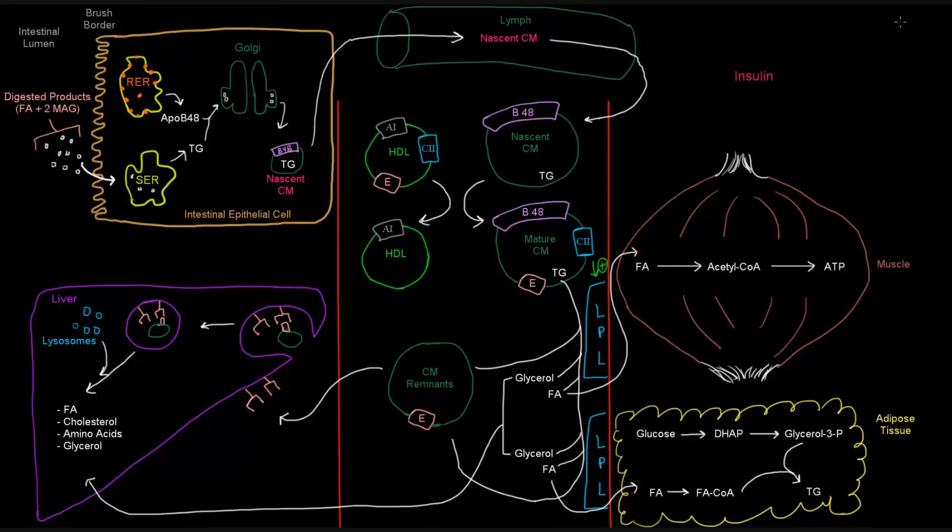Let's start up here at the top left in the intestinal lumen. So in the intestinal lumen, that's where we're going to have the digestive products from the food that we ate. We're going to have some fatty acids and some 2-monoacylglycerols. This just means that the acyl group that's attached to the glycerol is on the 2-carbon or the second carbon of the glycerol backbone. So these things are going to be taken up into the intestinal epithelial cells across the brush border from the intestinal lumen.